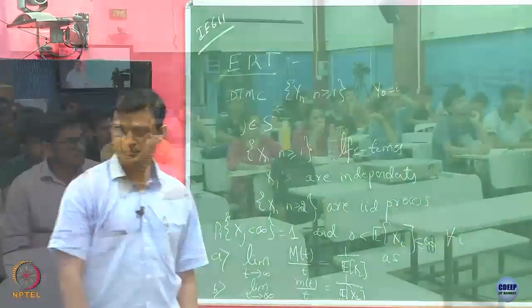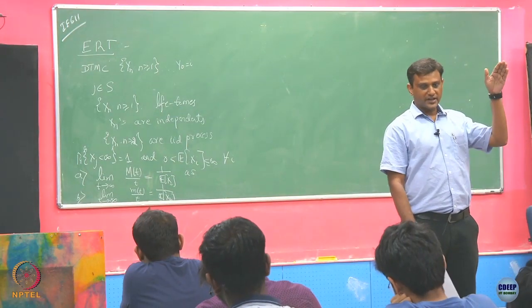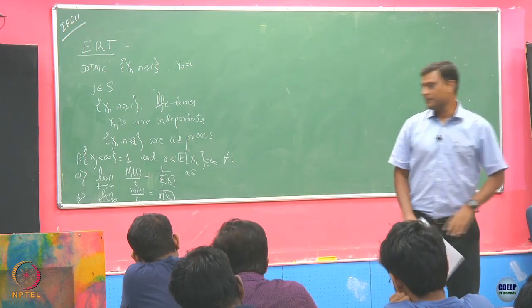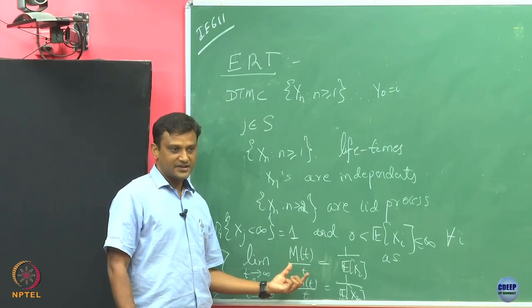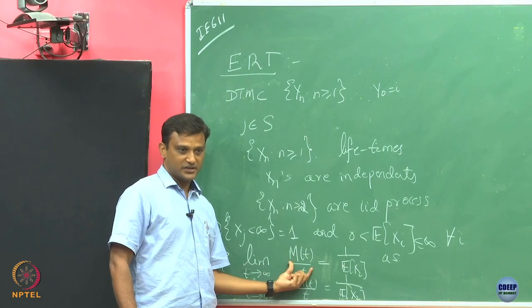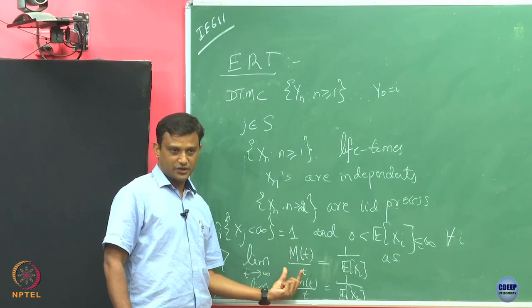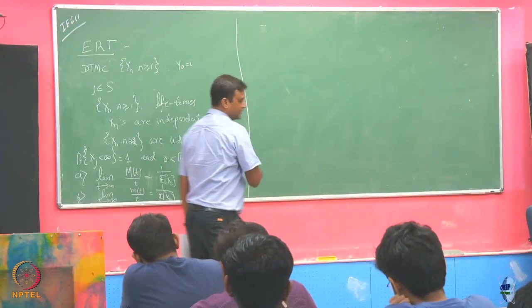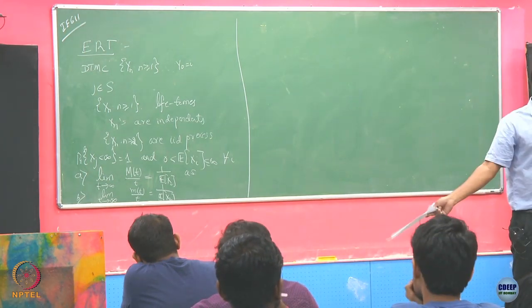We discussed this last time. If the expected value of X_2 is going to be large, that means I am not returning to my state in a small number of times — maybe I am going to take a large number of rounds to come back. In that case, I do not expect this quantity to be large. If E[X_2] is large, then m(t)/t is small, because m(t)/t is the average number of renewals in the interval 0 to t. We understand this intuitively as the correct result.